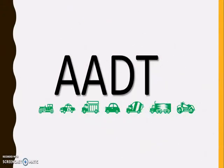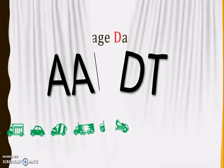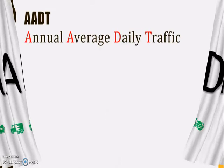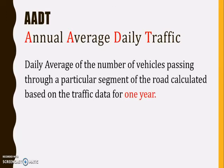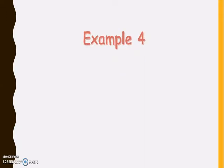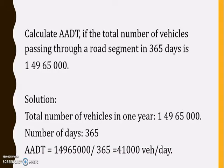The next point of importance is AADT, the annual average daily traffic. It is the averaging of daily traffic for one continuous year. If you are calculating the number of vehicles travelling through a particular road for the entire year, making the average of that value on a daily basis will give you the AADT. For example, to calculate the AADT: the total number of vehicles passing through the road for 365 days is 14,965,000. We divide the total number of vehicles by 365 and we get 41,000 vehicles per day.